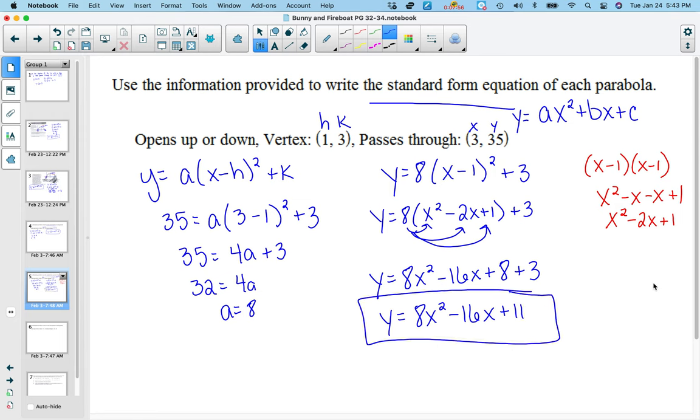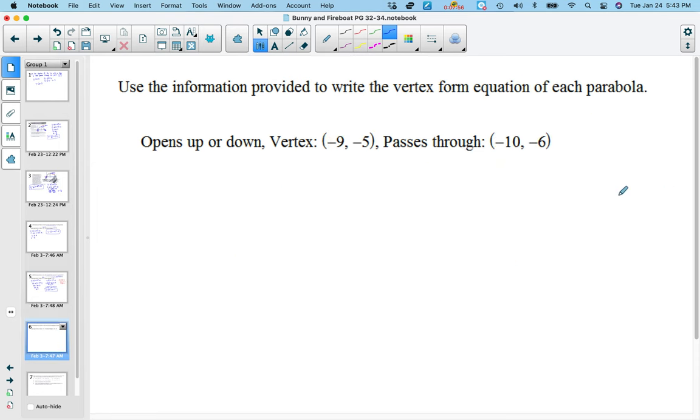I get y equals 8x squared minus 16x plus 11. And that would be my quadratic equation in standard form. All right, so here's another one in vertex form. I like them when they're in vertex form. So this is h, this is k, this is x, this is y.